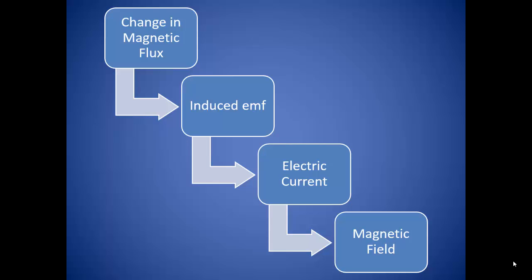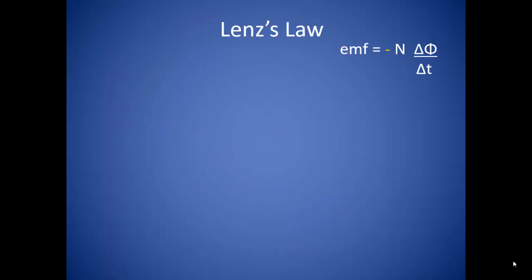Changing the magnetic flux will induce an EMF in the conducting wire. The induced EMF in turn creates an electric current through the wire, which will then induce its own magnetic field. So now we have two magnetic fields in the same system. This brings us to Lenz's Law.